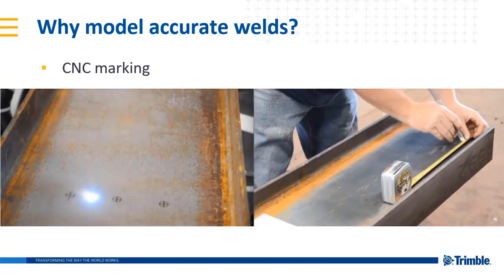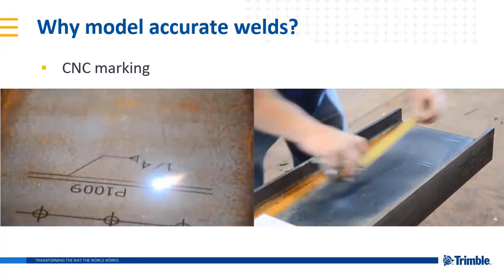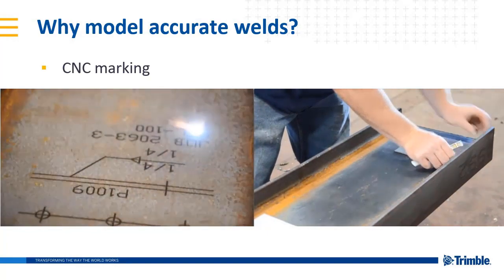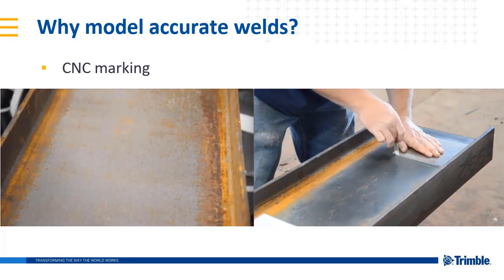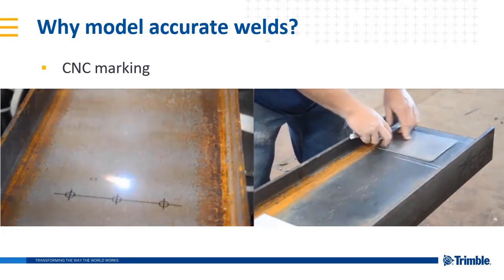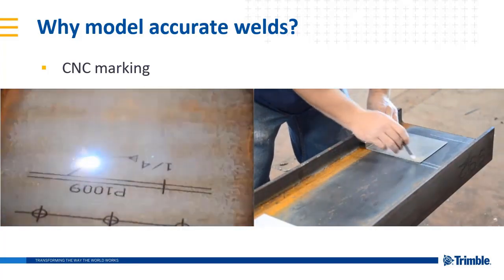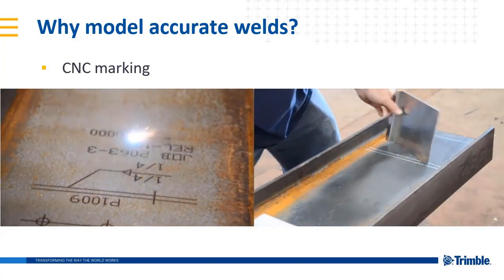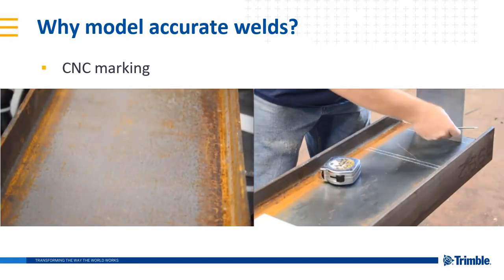The marking or scribing of attached part contours can improve the accuracy and save time in the fitting and layout process. This is already a long proven benefit with technologies available for many years. If welds are accurately modeled, weld information can also be automatically marked on parts using these same technologies. Here we see one of the faster technologies, a laser marking system from Controlled Automation.